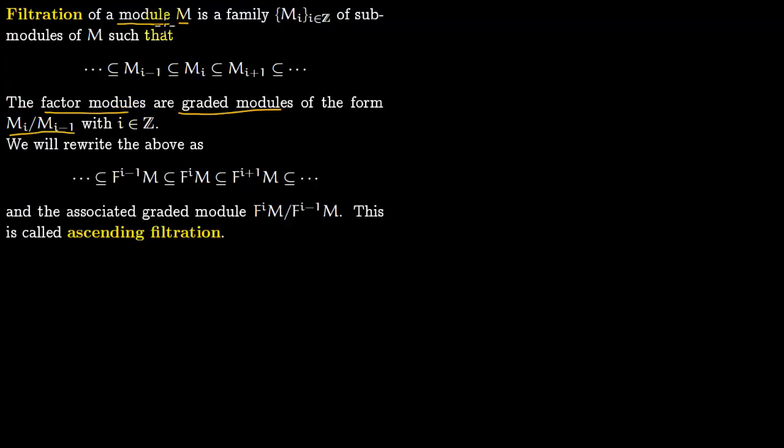We are going to rewrite this in a different form. Instead of writing M_{i-1}, we write F^{i-1}(M), which automatically means we are talking about a submodule of M. We have F^i(M), F^{i+1}(M), where F denotes the filtration. The associated graded module is of the form F^i M over F^{i-1} M.